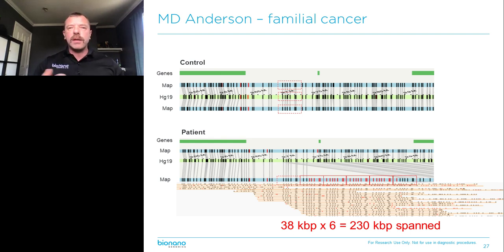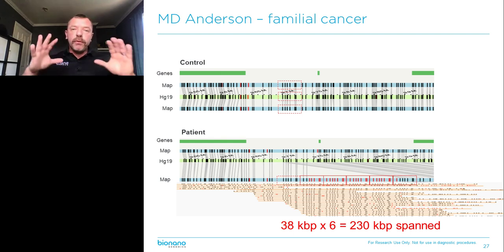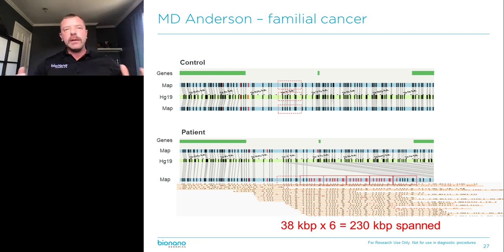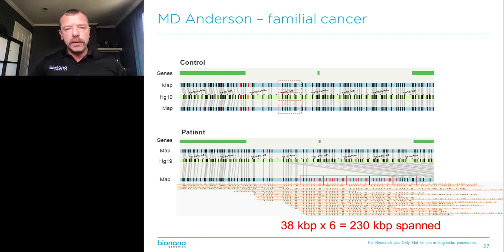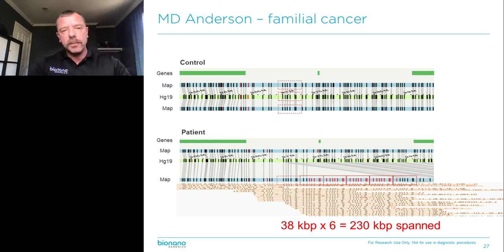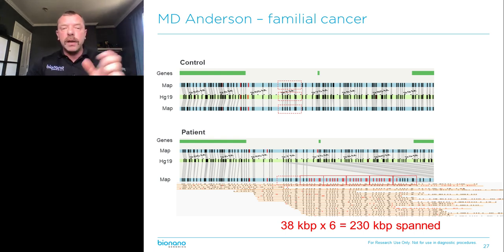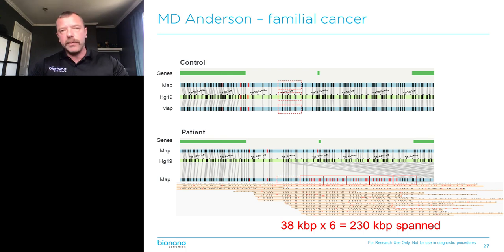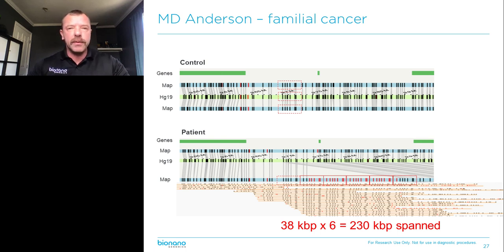We observe structural variants directly on single molecules, compared to NGS where they are inferred algorithmically after chopping up the genome into little pieces. The important finding here is that the gene labeled on the left is known to be mutated in this tumor pathway — an interesting finding for this family that was impossible to detect with other methods.